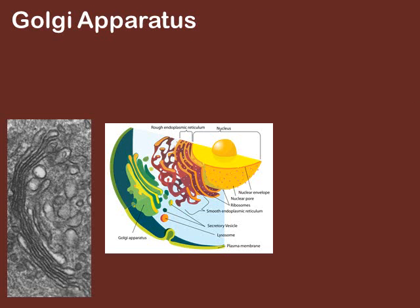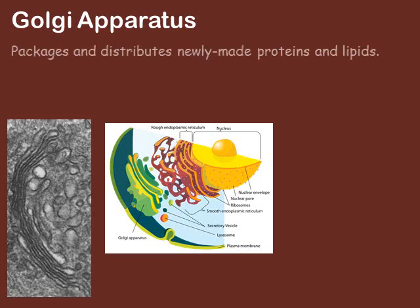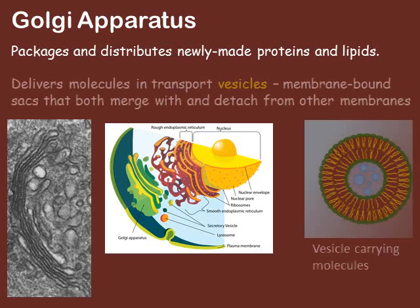The Golgi apparatus is this narrow band of membranes, often in a crescent moon shape, just beyond the endoplasmic reticulum. The Golgi apparatus is responsible for taking those newly created proteins and lipids from the ER, putting molecular markers on them, and basically telling them where they need to go — either outside the cell or somewhere else within the cell.